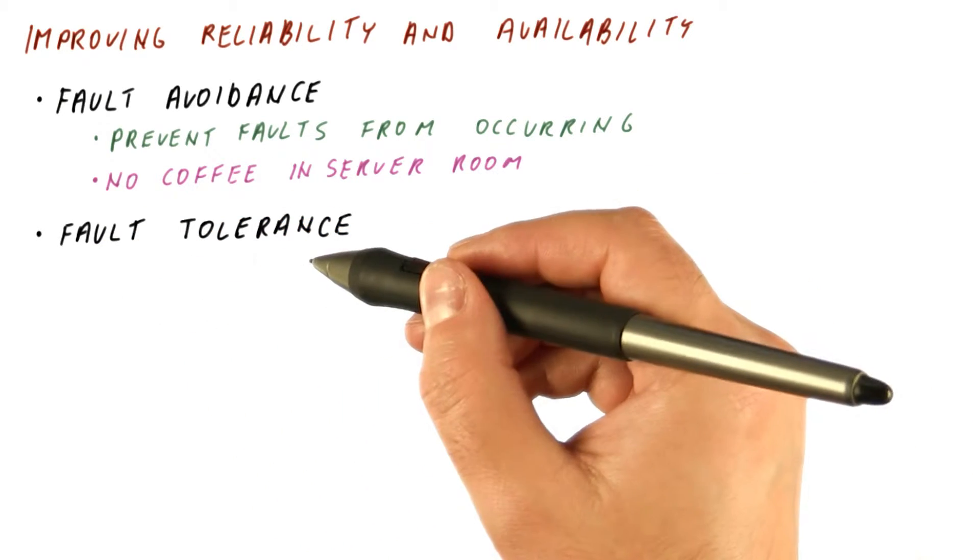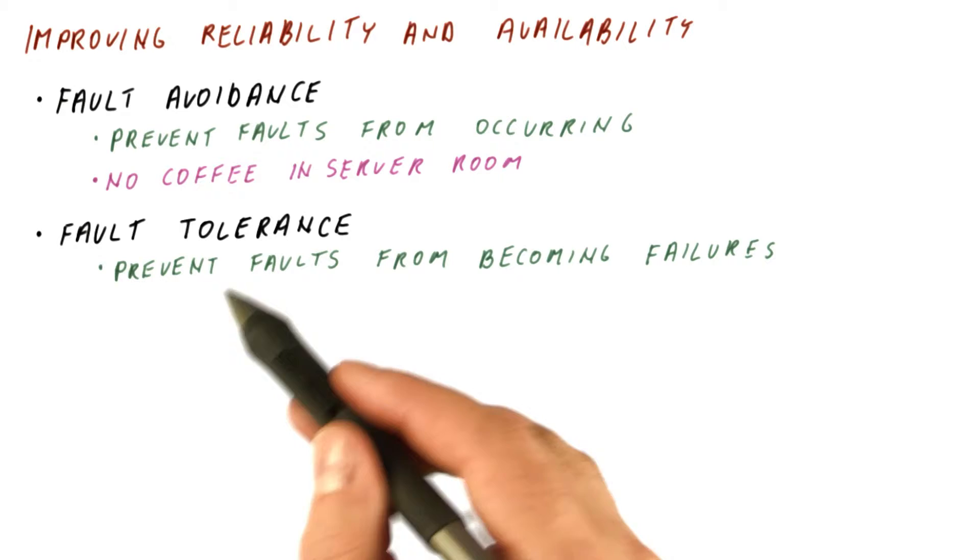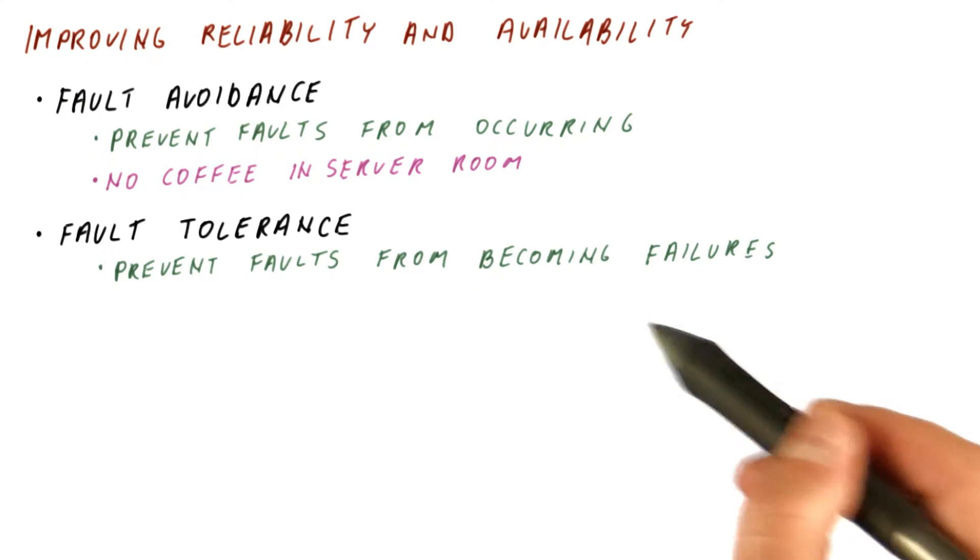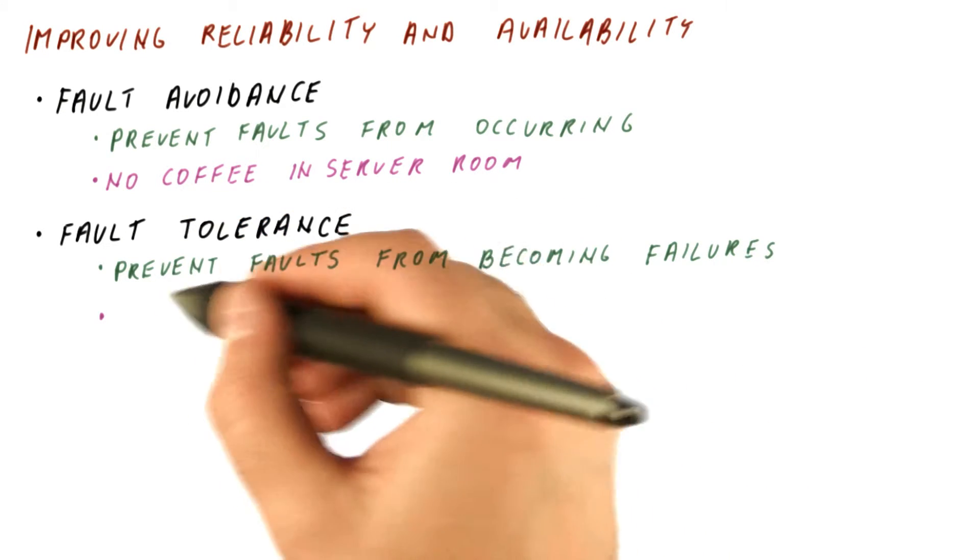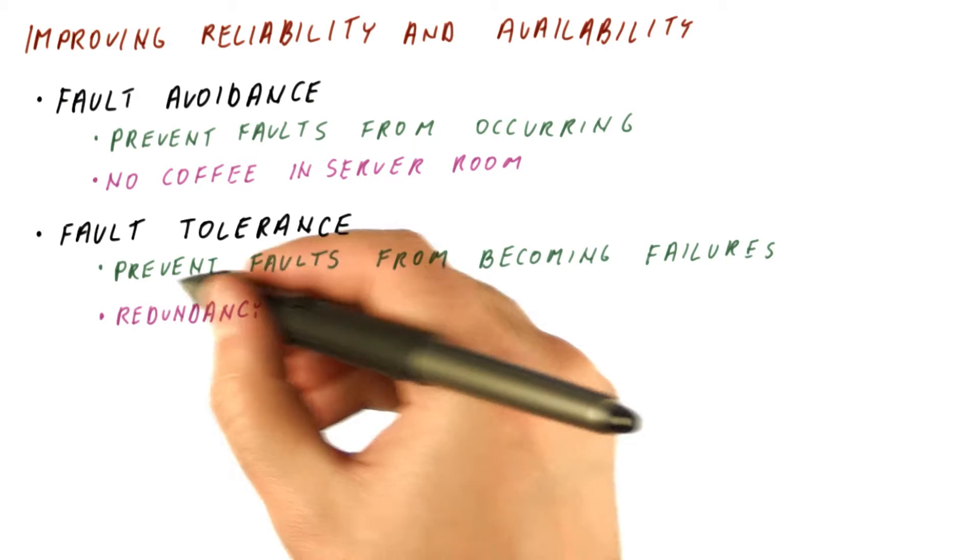Next, we can have a fault tolerance technique. They're about preventing faults from graduating into failures. A typical fault tolerance technique will use redundancy.